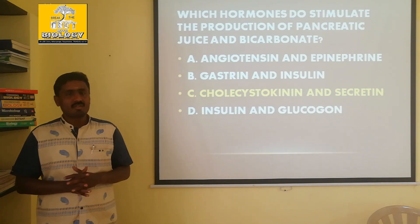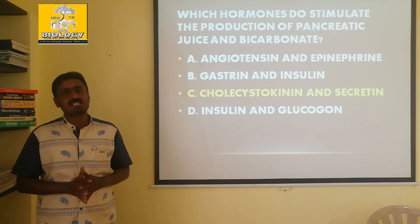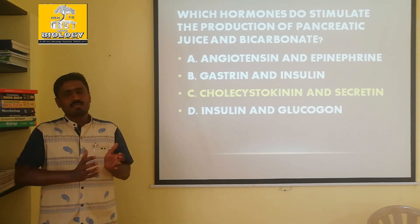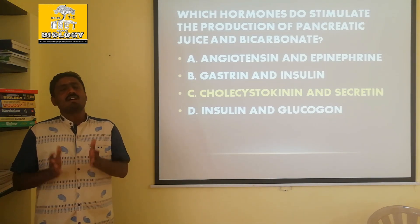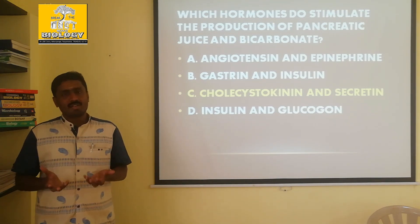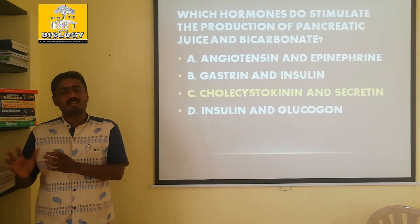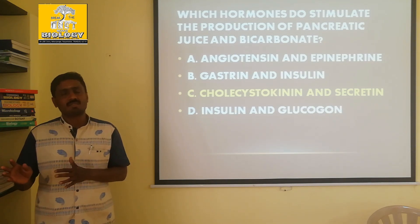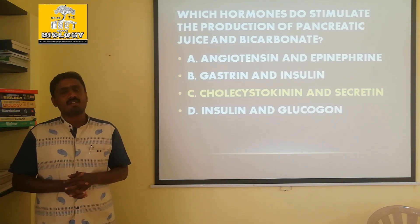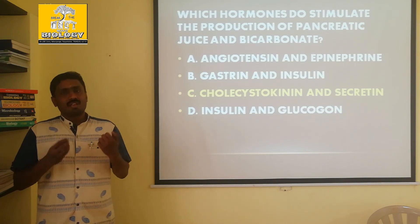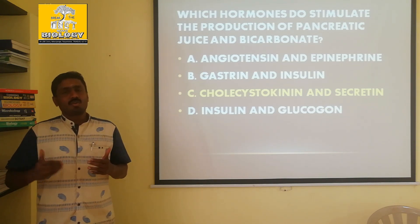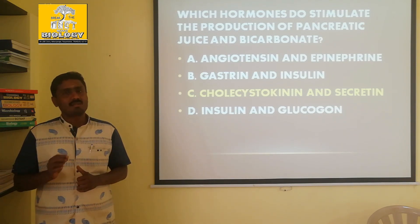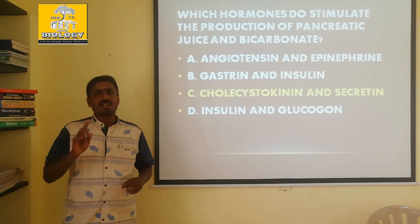Insulin and glycogen are antagonistic to each other. Insulin puts glucose into the bloodstream and stores glucose as glycogen in cells. When we have not eaten, glycogen is broken back into glucose. The two hormones insulin and glucagon are both secreted by the pancreas.